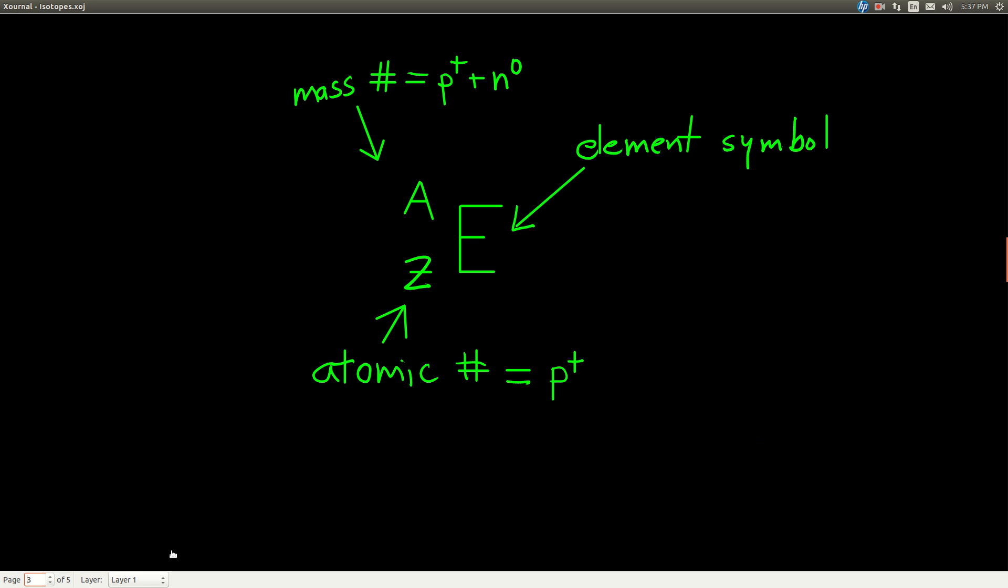We have an isotopic symbol, a way of writing down the symbol for a specific isotope, and the general format looks like this. Here, E stands for whatever the symbol is for the element. Say it's carbon, that would be a C, or hydrogen, it would be an H.